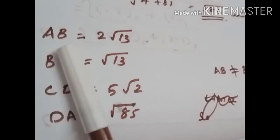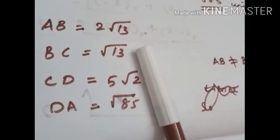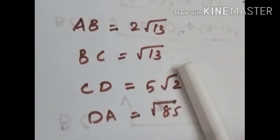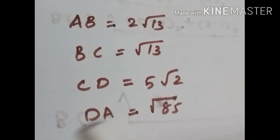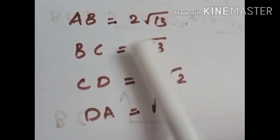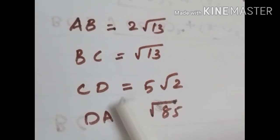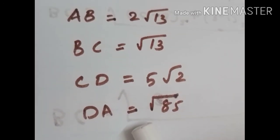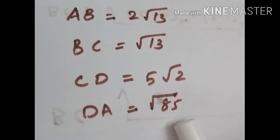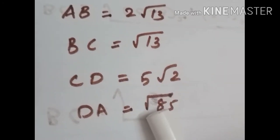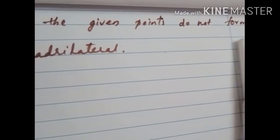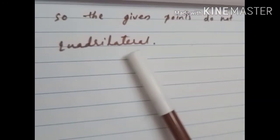So AB = 2 root 13, BC = root 13, CD = 5 root 2, and DA = root 85. All four sides are different and opposite sides are not equal, so we can conclude that the given points do not form a quadrilateral.